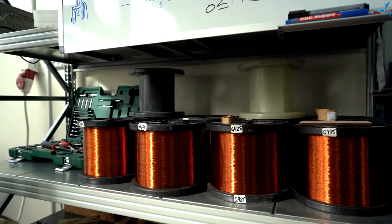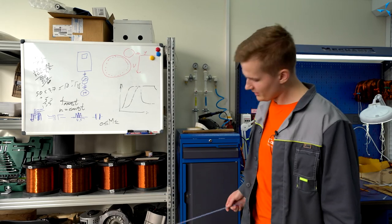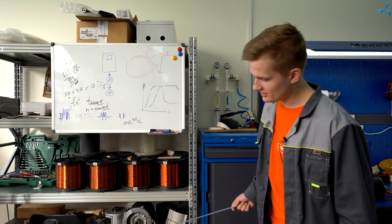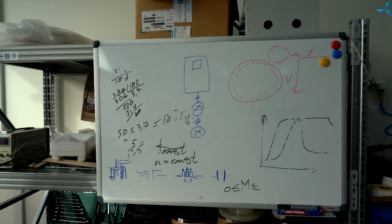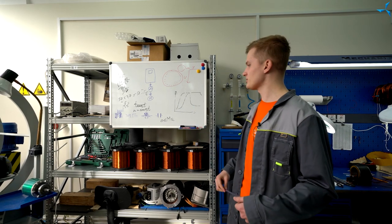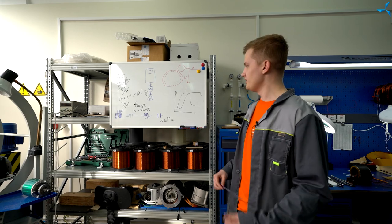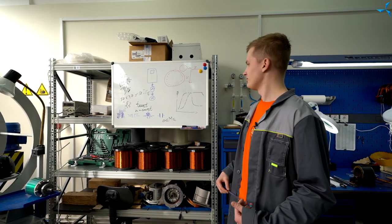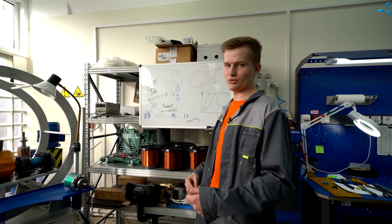Here we have a rack with copper wire coils of various diameters and samples of different electric motors and stators. There is also a board where the employees can put down their calculations while working on a particular motor, and in case of any problems, they can easily refer to their calculations as well as any other information they have written down here.